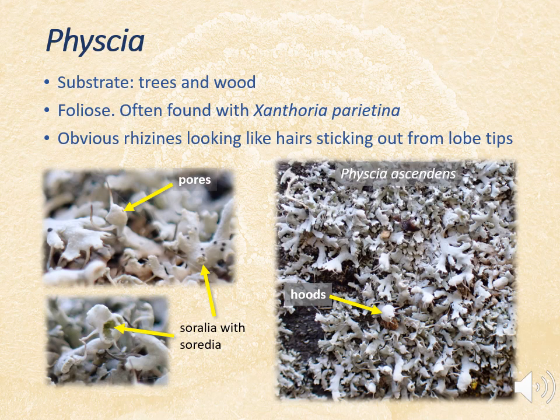Physcia adscendens also has other features that differentiate it from Physcia tenella, including these hood-like structures. If you look at the ends of those very closely you'll see a soralia packed with soredia — those powdery granules — and there will also be a number of black spots or pores.